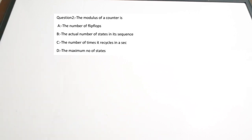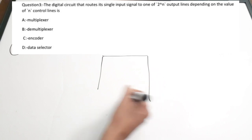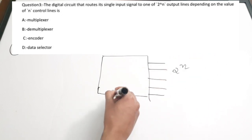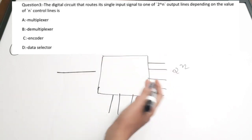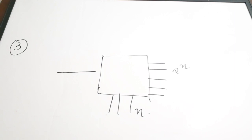Third question: the digital circuit that routes its input signal to one of 2^n output lines depending on n control lines is dash. This circuit has 2^n output lines and n input control or select lines. This is actually a demultiplexer, or DMUX.